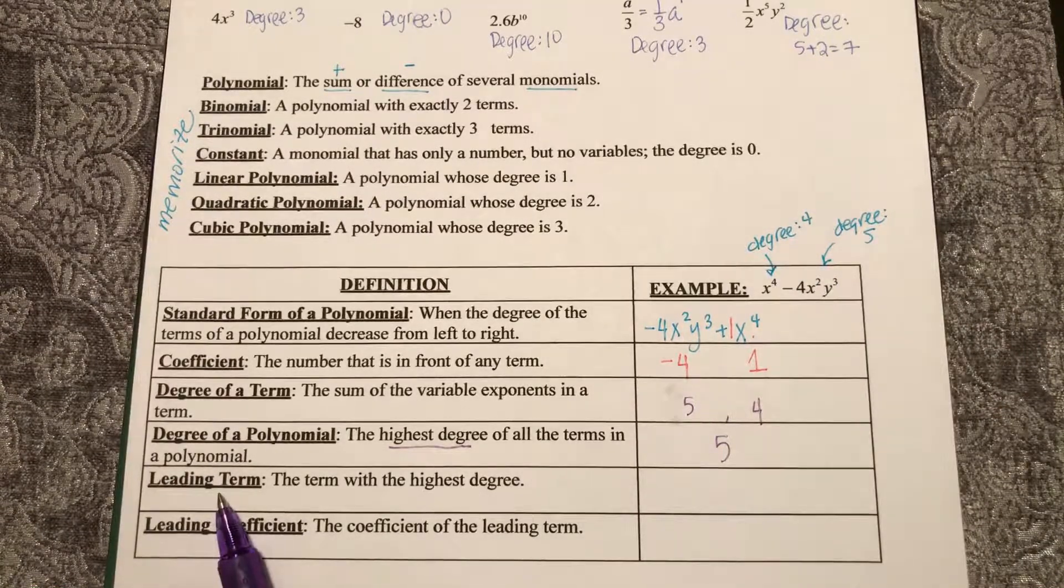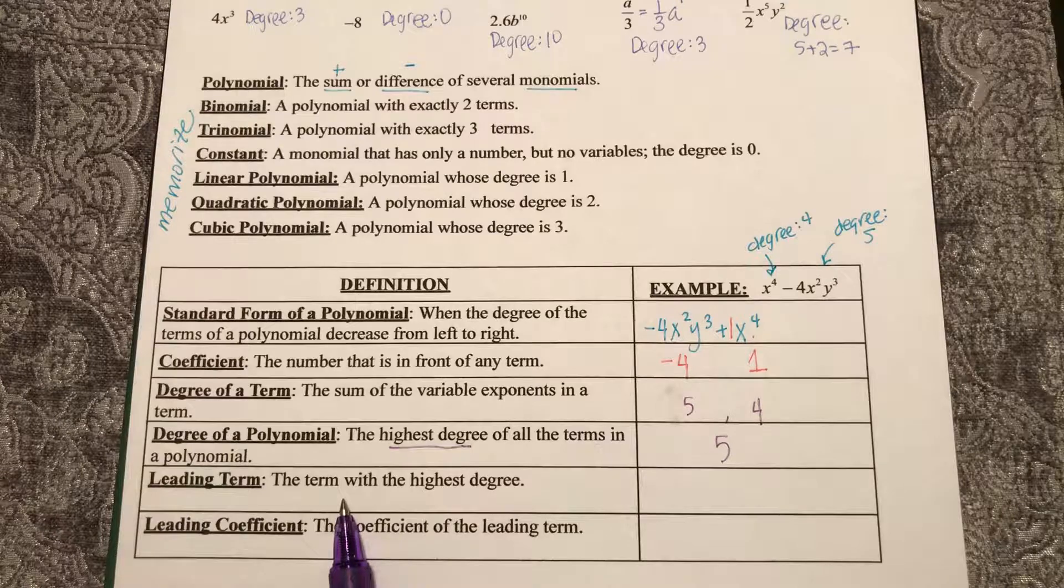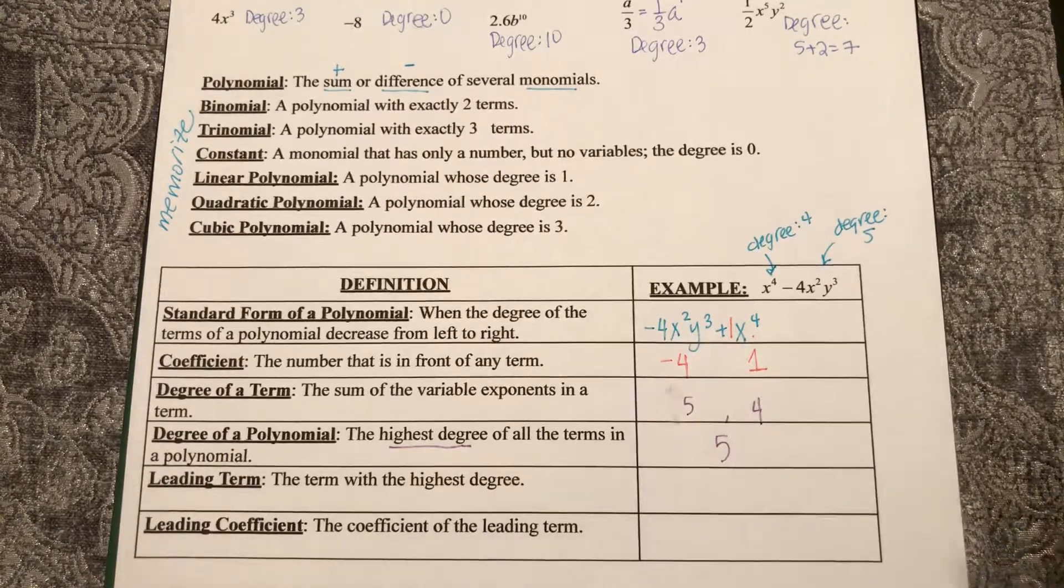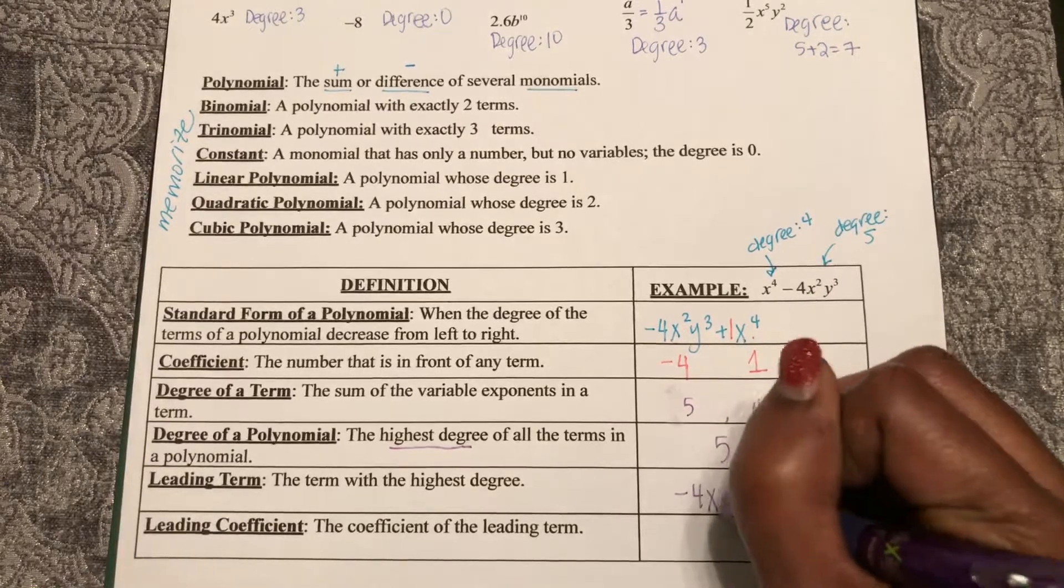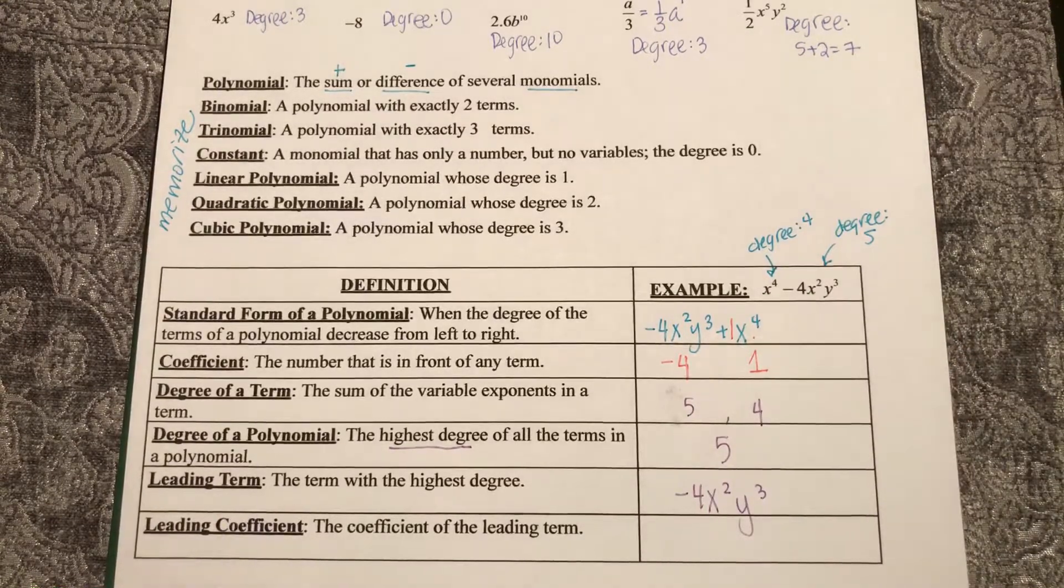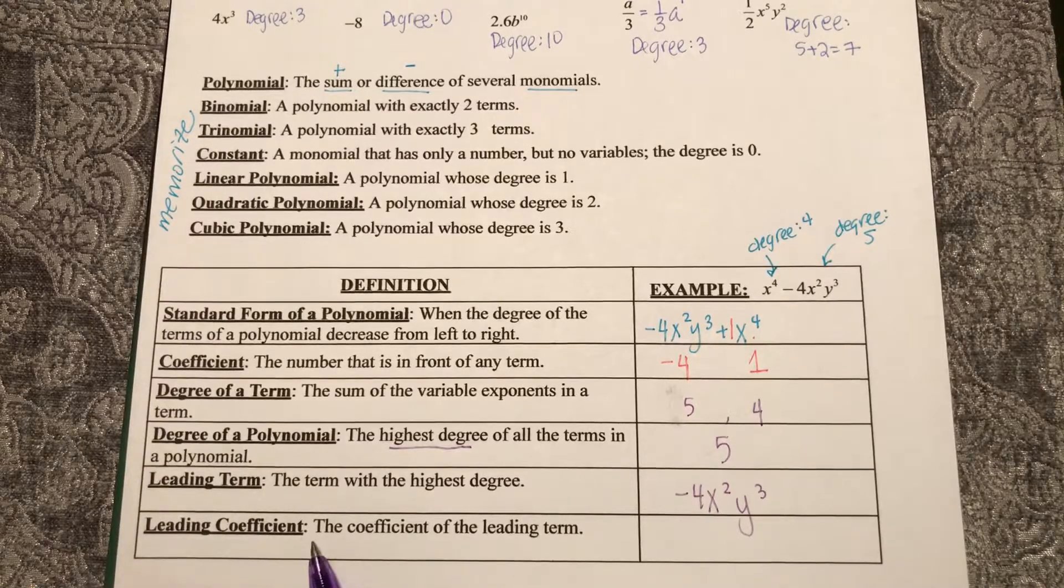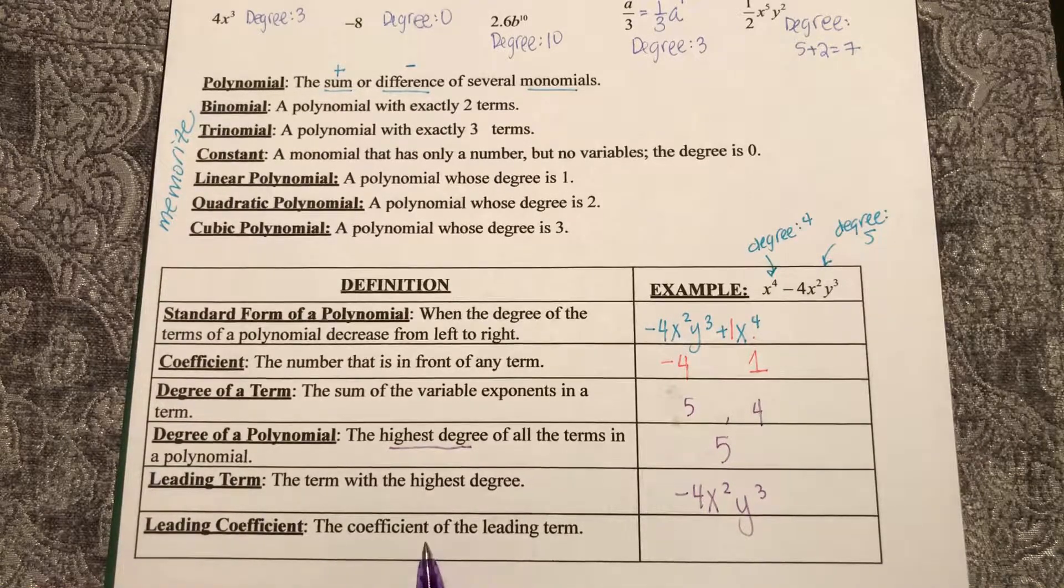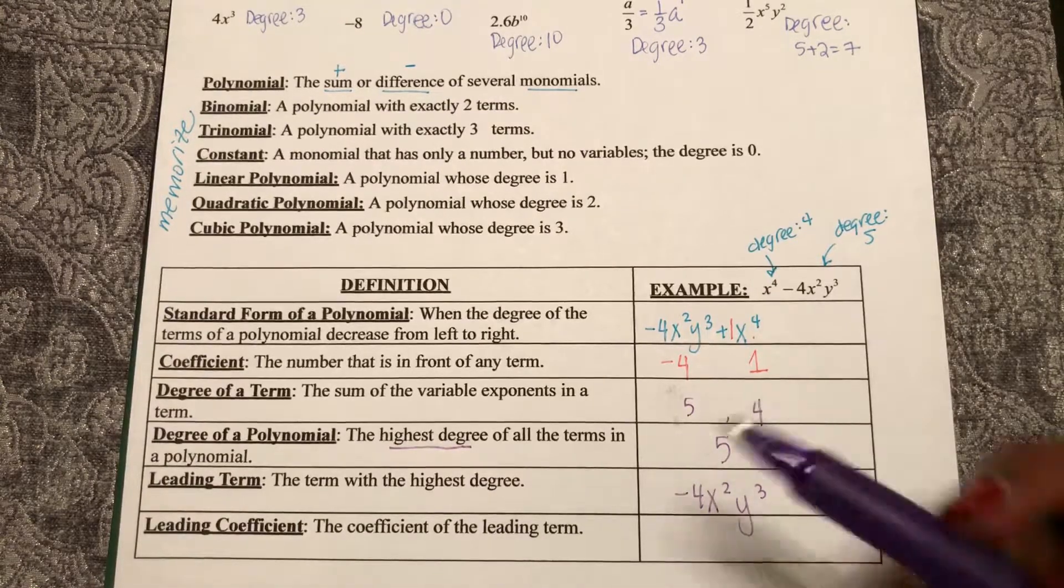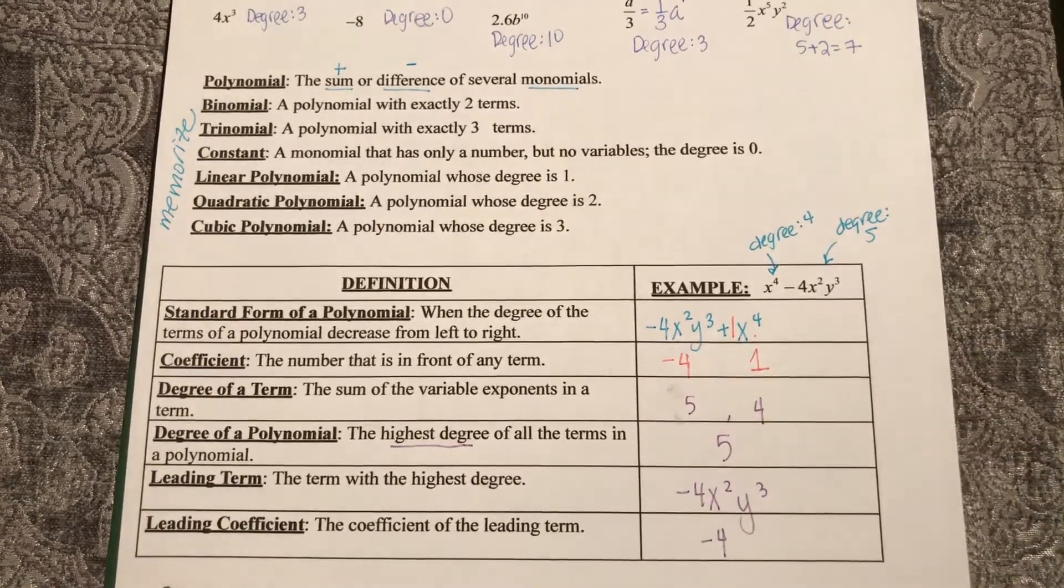And then the leading term is the term with the highest degree. The highest degree is this term, so negative four x squared y to the third would be my leading term. The leading coefficient is the coefficient of the leading term, and the coefficient is the number that's in front, negative four.